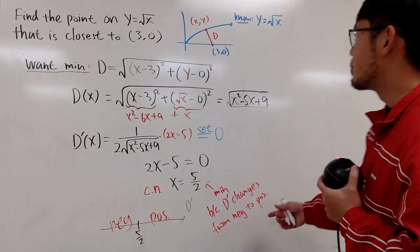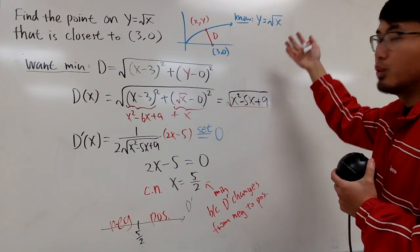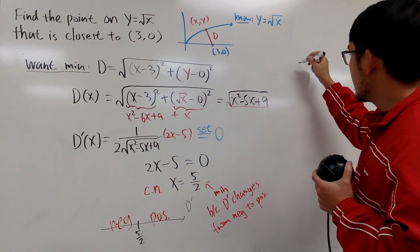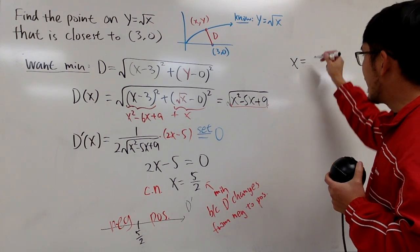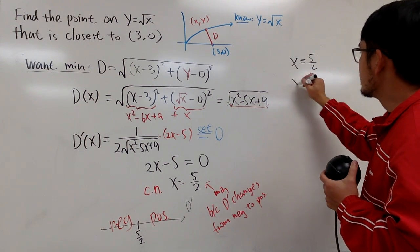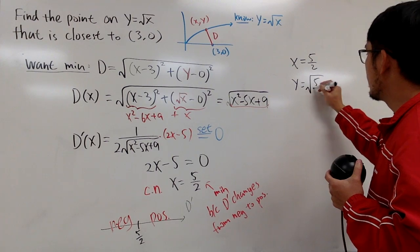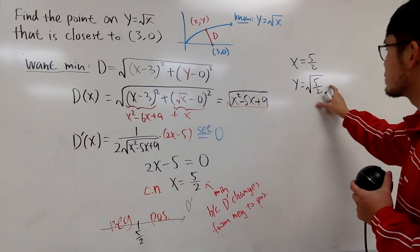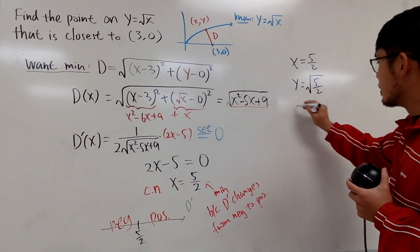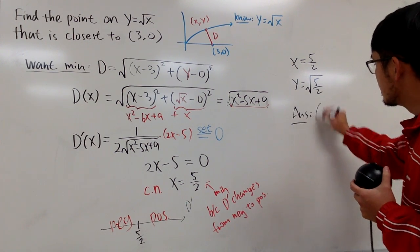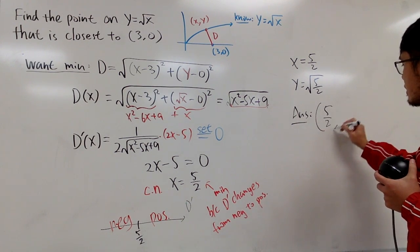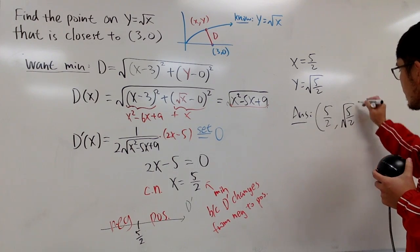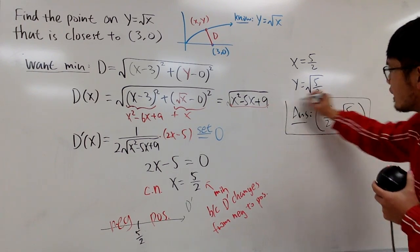And with that being said, we're pretty much done. We just have to find out y value, which we can refer back to here. Now we know x is 5 half. And then y will just be square root of 5 over 2, like this. And because we're in calculus, that means we're all adults now. You don't have to rationalize the denominator. So in the end, the answer is just the point, 5 over 2, comma, square root of 5 over 2. And with that, we are done.